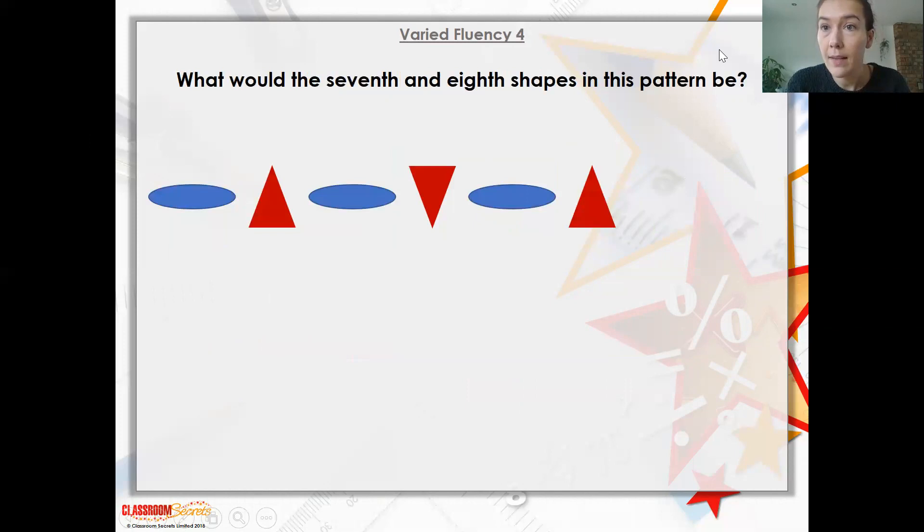Then this is another example of a question that you might have today. So what would the seventh and eighth shape in the pattern be? We've got sort of an oval shape and then your triangle. So the seventh and eighth shape, it would continue on with the pattern.